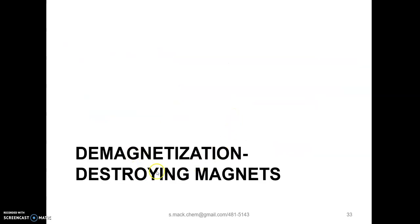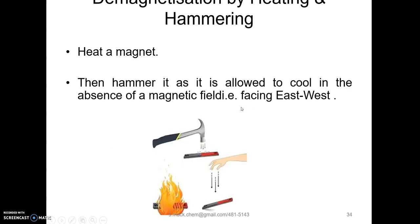Now let us look at demagnetization, which is called destroying magnets. How can a magnet be destroyed? One method is by heating and hammering. Even though it sounds similar to making a magnet, what is done differently is: you heat the magnet and hammer it as it cools, but in an east-to-west direction. This will demagnetize a magnet.